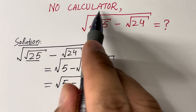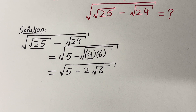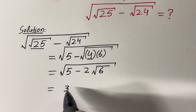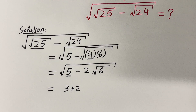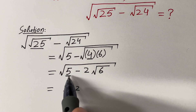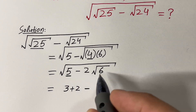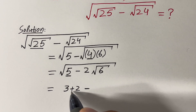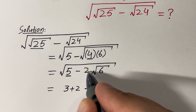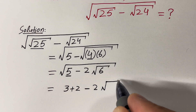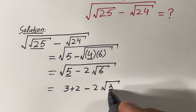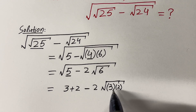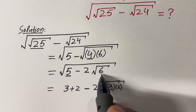Now we apply a trick since we can't use a calculator. The trick is to break 5 as 3 plus 2 — since 3 plus 2 equals 5, this is correct. Similarly, inside the square root we write 6 as 3 times 2, because 3 times 2 equals 6. So we keep the 2 in front, and write square root of 6 as square root of 3 times 2.